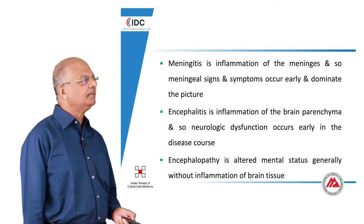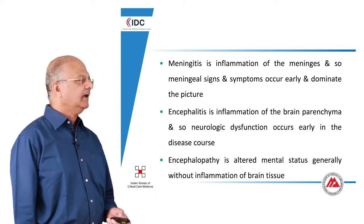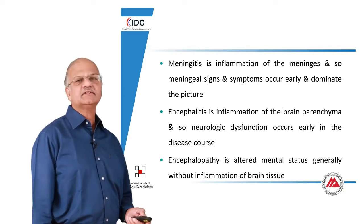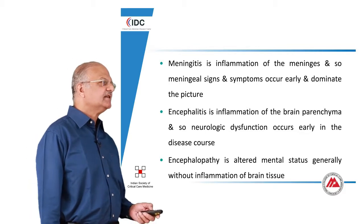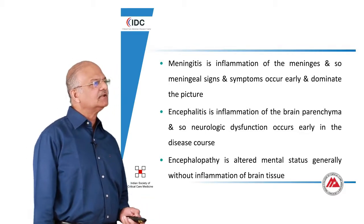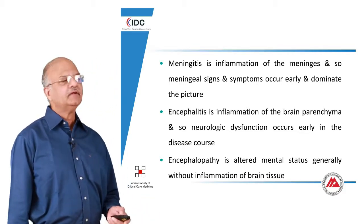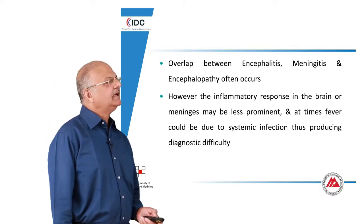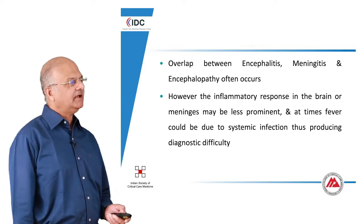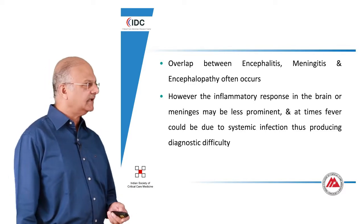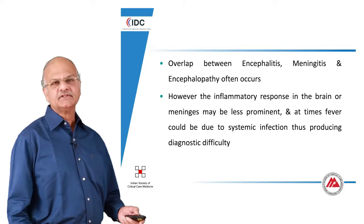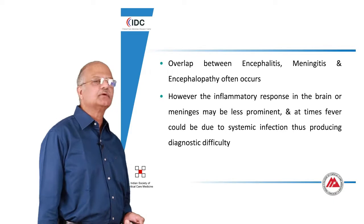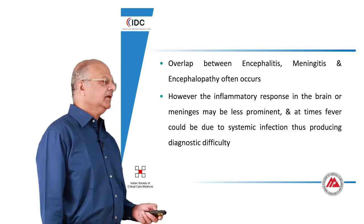Encephalitis is inflammation of the brain parenchyma, and neurologic dysfunction is the most early symptom in this disease. Encephalopathy is altered mental status generally without inflammation of brain tissue, and it has different systemic causes. Unfortunately, there is a huge overlap between encephalitis, meningitis, and encephalopathy, although the definitions appear to be watertight, making it very difficult at times for the clinician to distinguish one from the other.